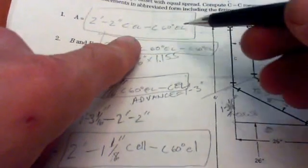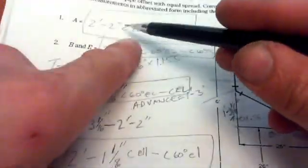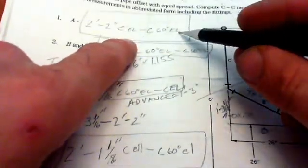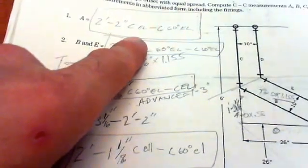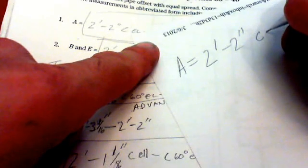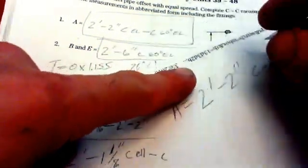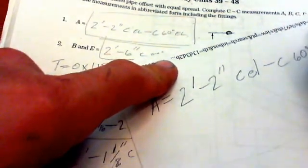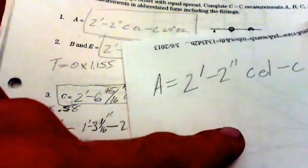I imagine it's good to get in the habit of labeling these properly. I'll just rewrite this here. A is 2 foot 2 inches, center of elbow to center of 60 degree elbow. And that's given information.